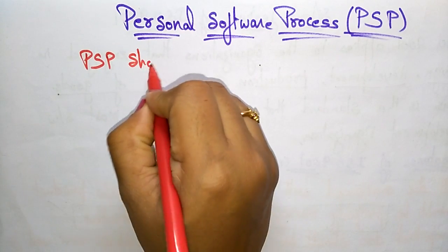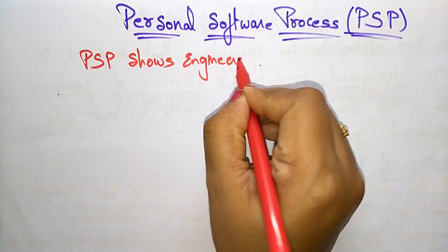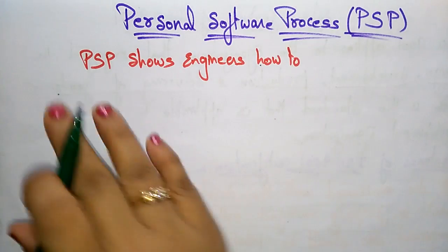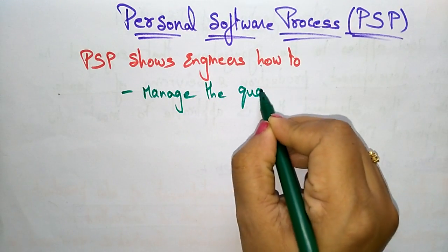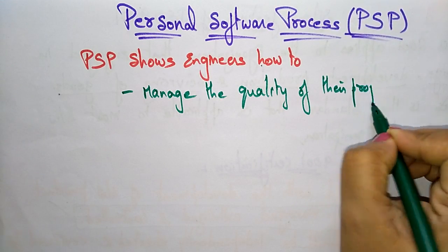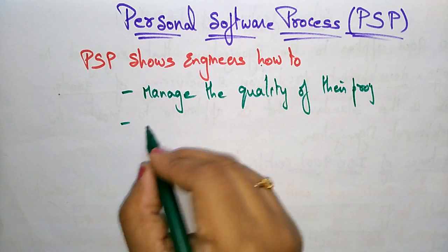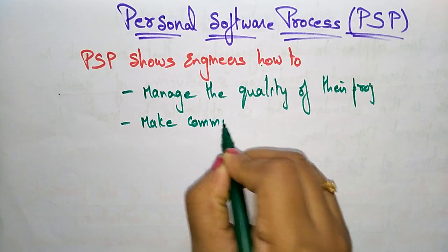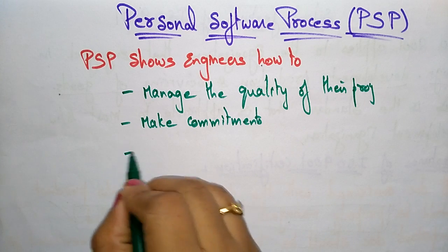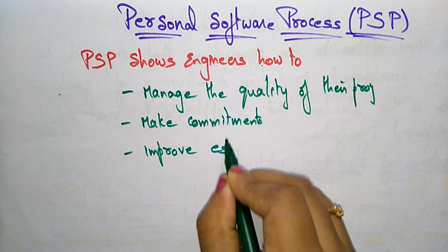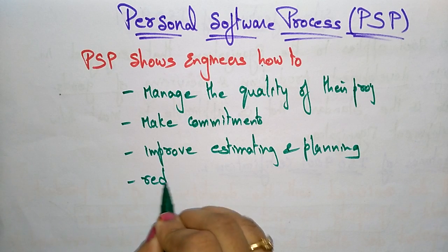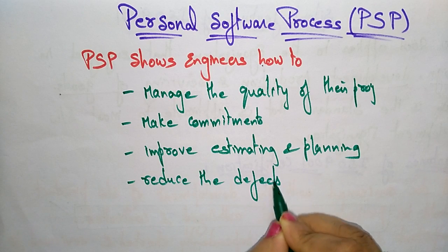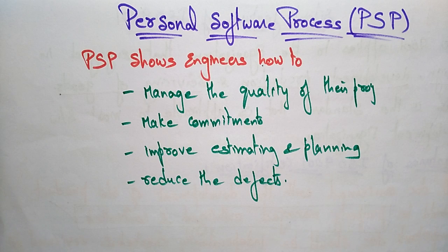Personal Software Process shows engineers how to manage the quality of their project, how to make commitments they can meet, how to improve estimating and planning, and how to reduce defects in their products. These are what the Personal Software Process covers for engineers.